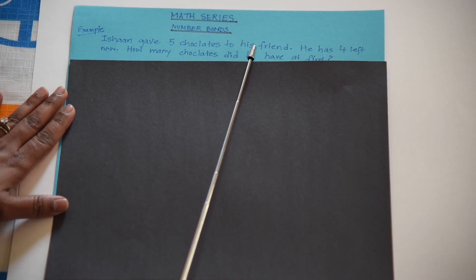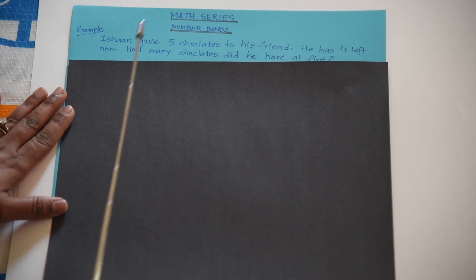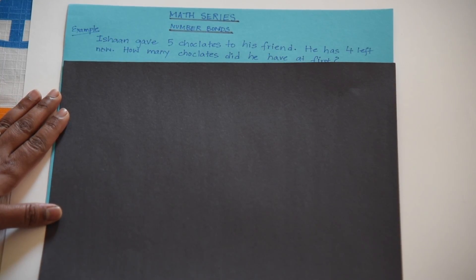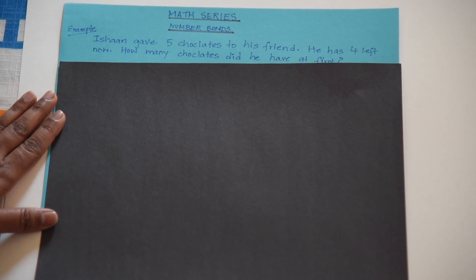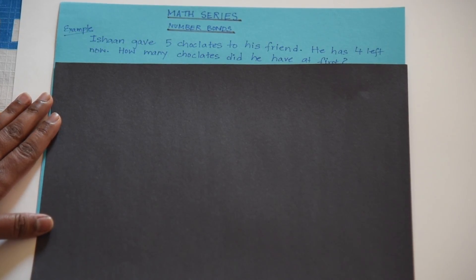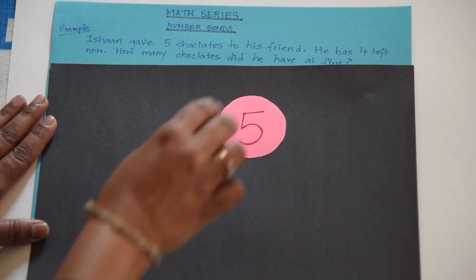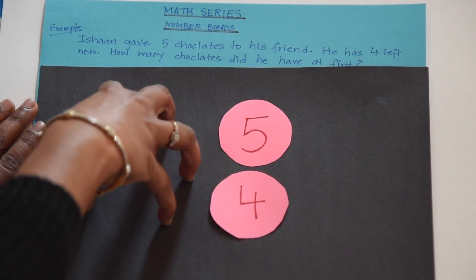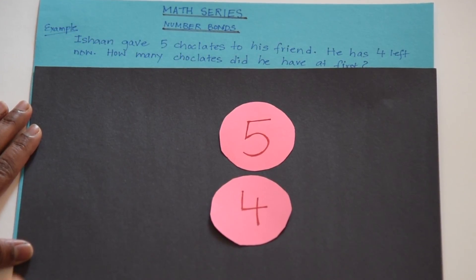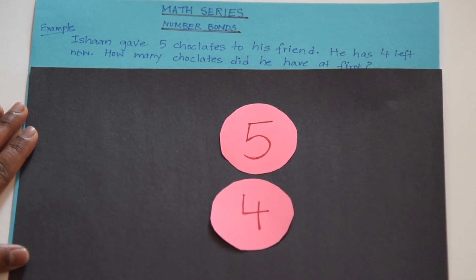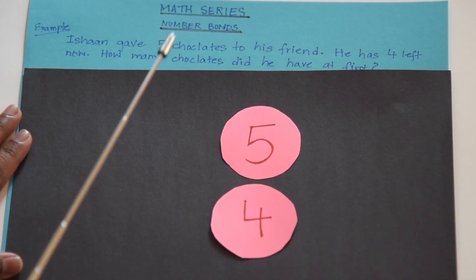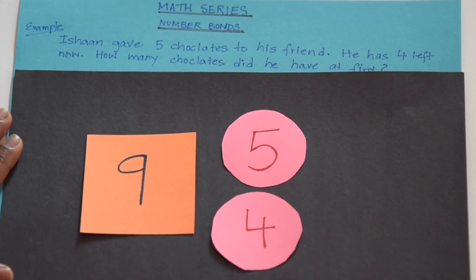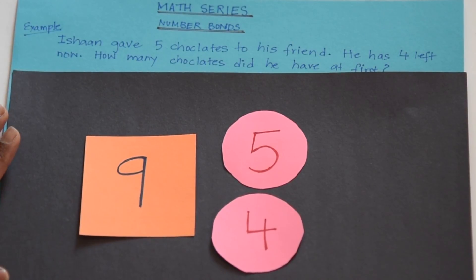Ishaan gave 5 chocolates to his friend. He has 4 left now. How many chocolates did he have at first? 9. Let's do this with the help of number bonds. Ishaan gave away 5 — that's one part. He has 4 left — that's another part. We need to find out how many he had at first, meaning we need to find the total — so this is an addition problem. Do you remember? 5 and 4 make the number bond of 9. The addition number sentence is 5 plus 4 equals 9. Great job.